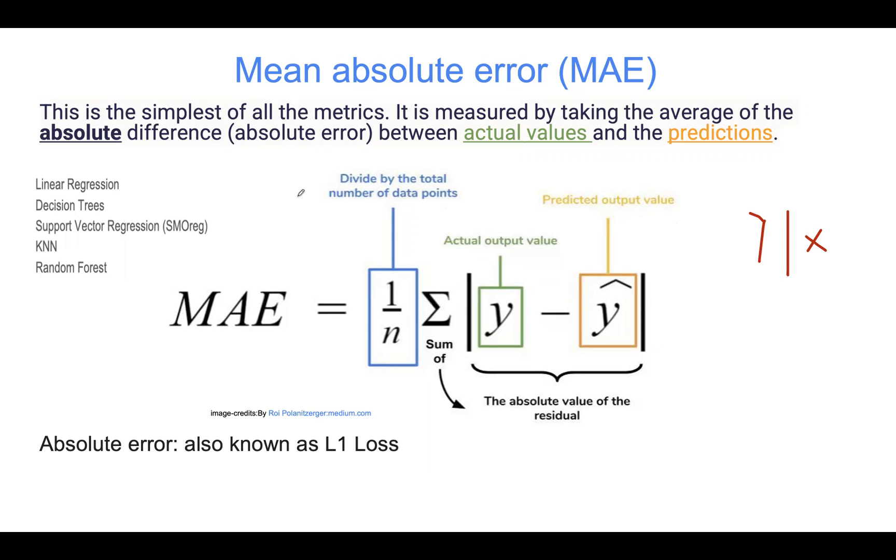This is one of the simplest of all metrics, and by definition, it's measured by taking the average of the absolute differences. Sometimes we call this the absolute error. This absolute error is also called the L1 loss, between the actual values and the prediction.